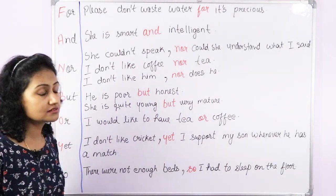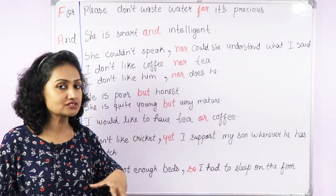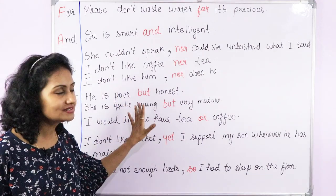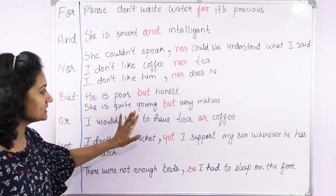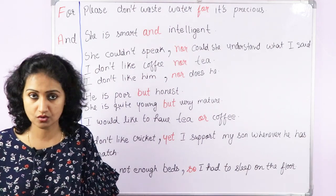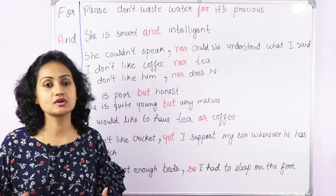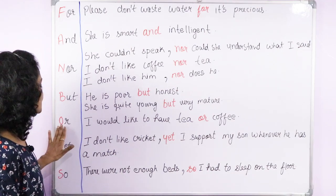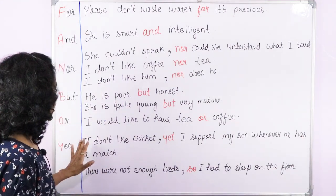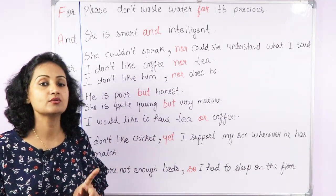Next is 'but.' But is used to show contrast in a sentence. For example: 'He is poor but honest' — it's showing a contrast. 'She is quite young but very mature.' Next is 'or.' Or shows that there is only one possibility — this or this. For example: 'I would like to have tea or coffee' — not both. Or means there is only one possibility.